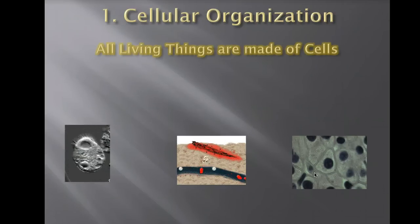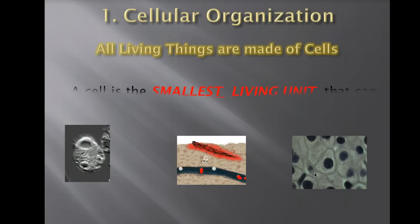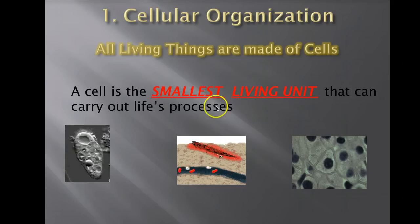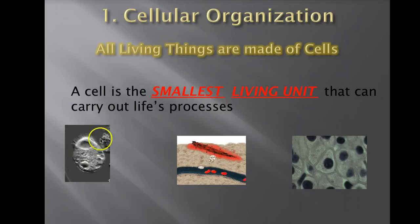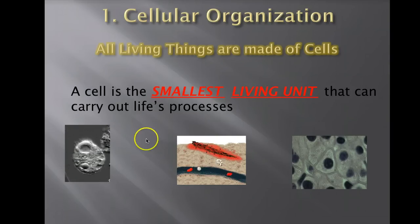The first characteristic of life is what we call cellular organization, and that basically just means that all living things are made of cells. Cells are the base unit for life processes — the smallest living unit that can carry out life processes by itself. Some things are just one cell, like this picture of an amoeba, which is just one cell — what we call unicellular — and some things are multicellular, which means they have multiple cells.